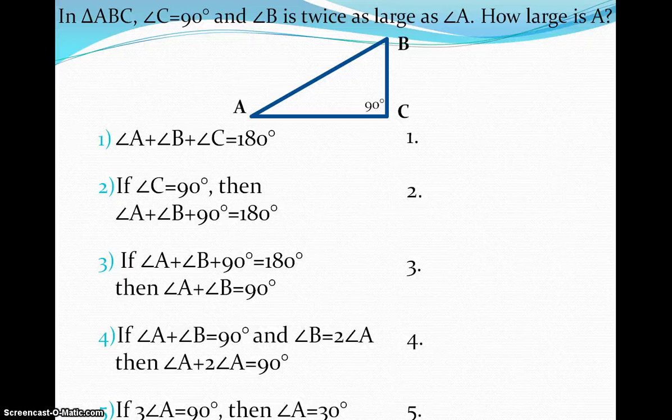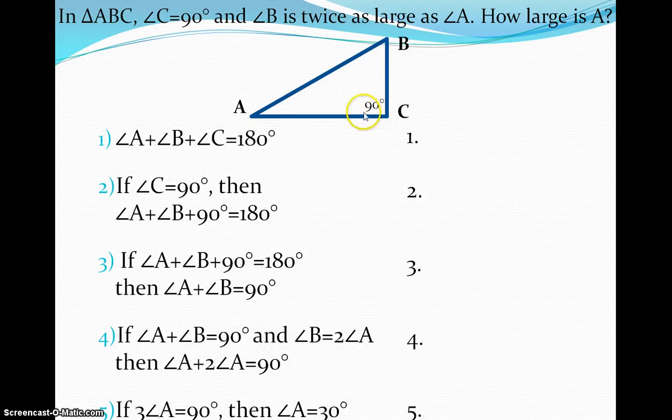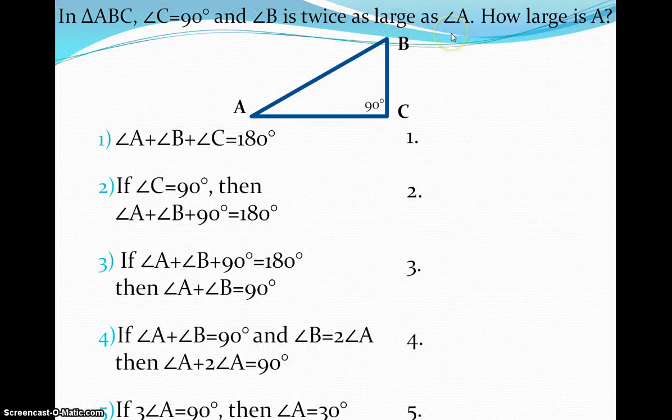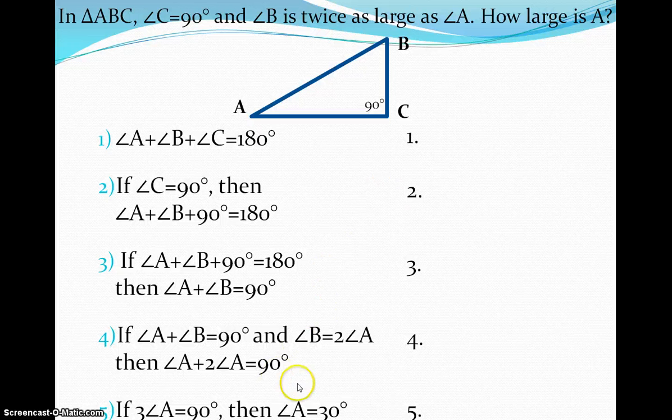So last but not least, what I'd like you to do for tomorrow is basically I'd like you to take a look at this statement. So in our triangle ABC, so right here, we have a 90 degree. And angle C is equal to 90 degrees, that's what I said. And B is twice as large as A. How large is A? And so what I actually want you to do is we're going to come up with basically step-by-step reasonings behind what A is equal to.